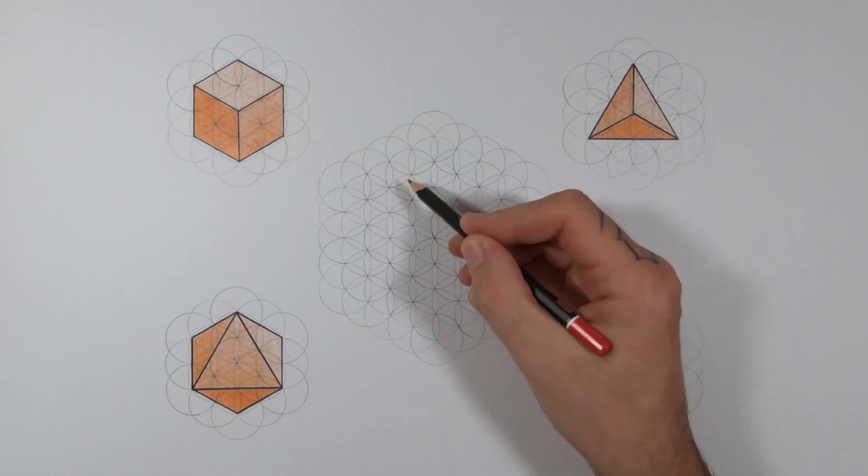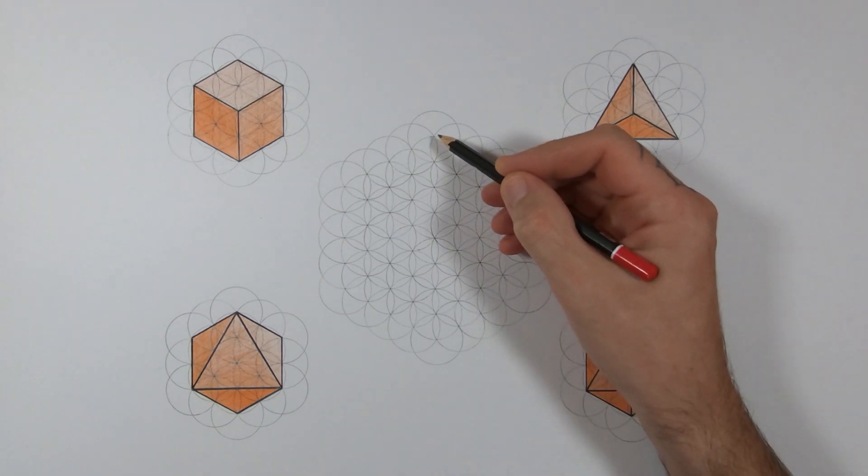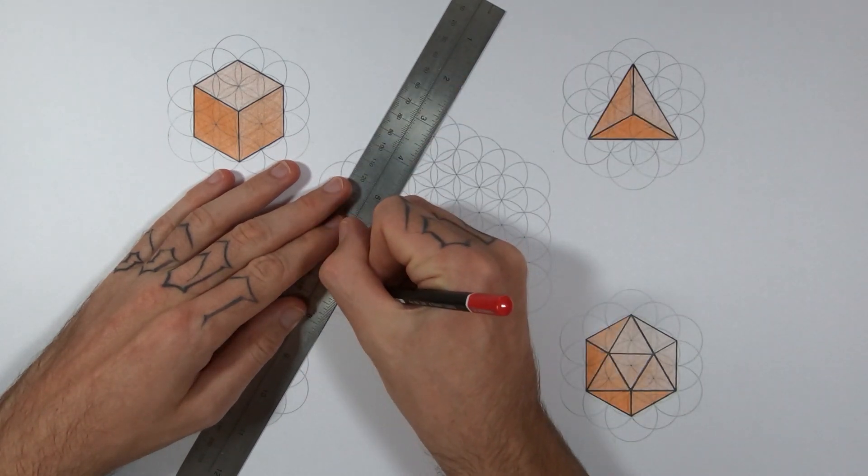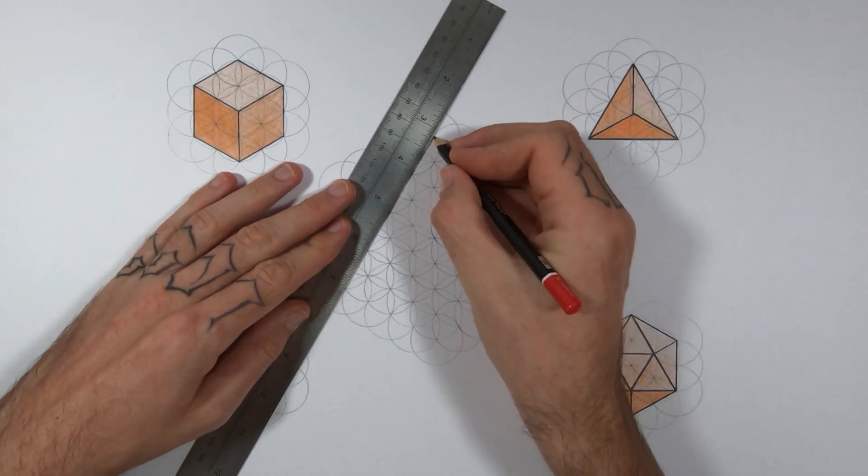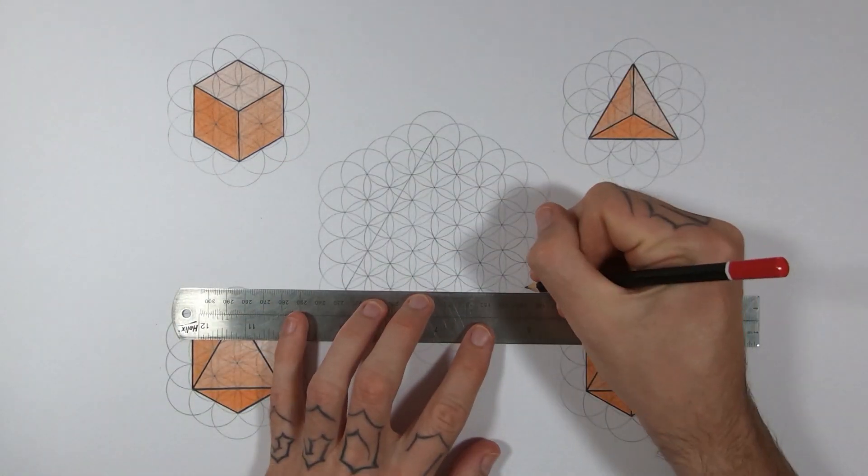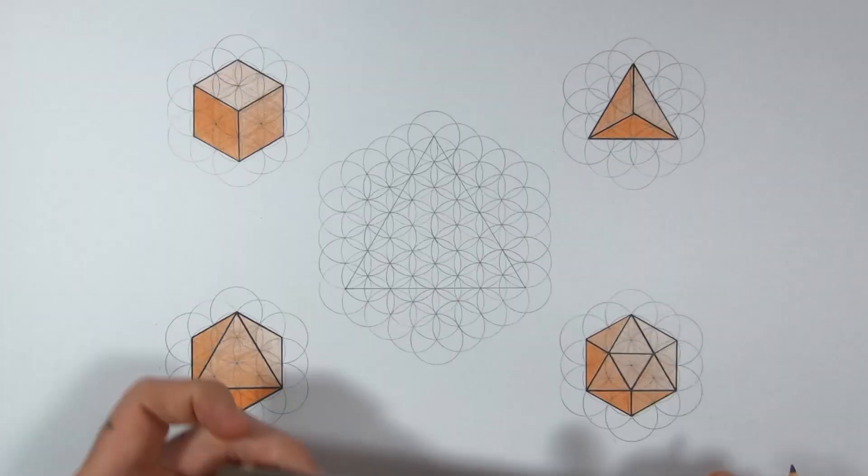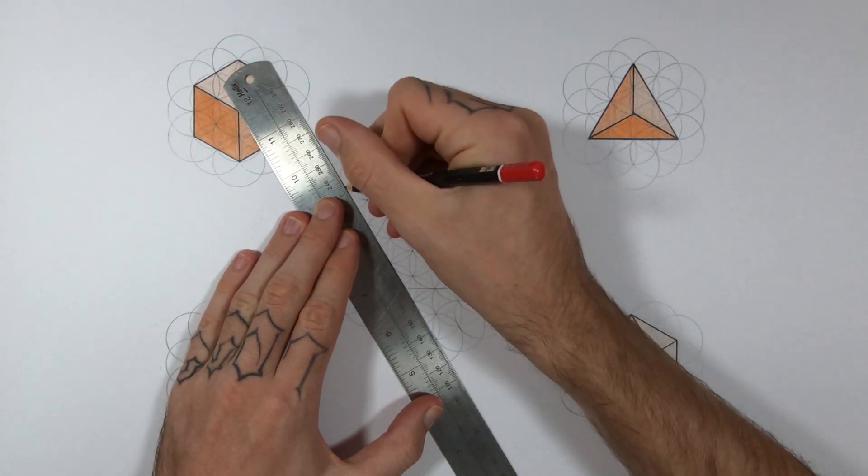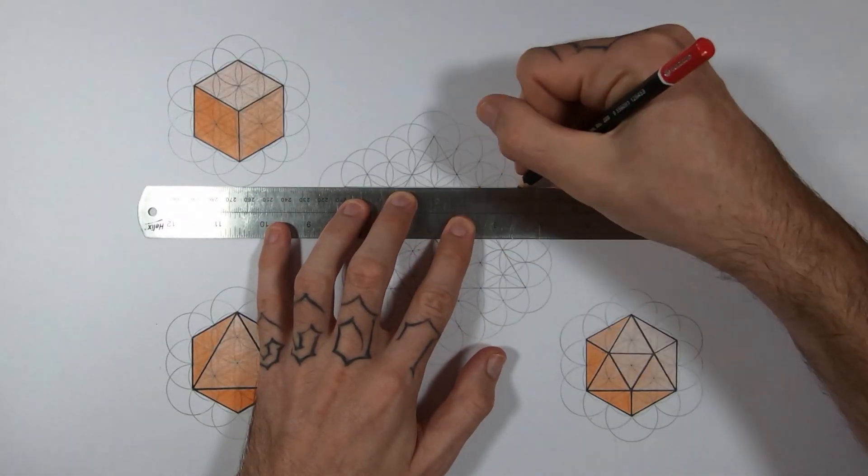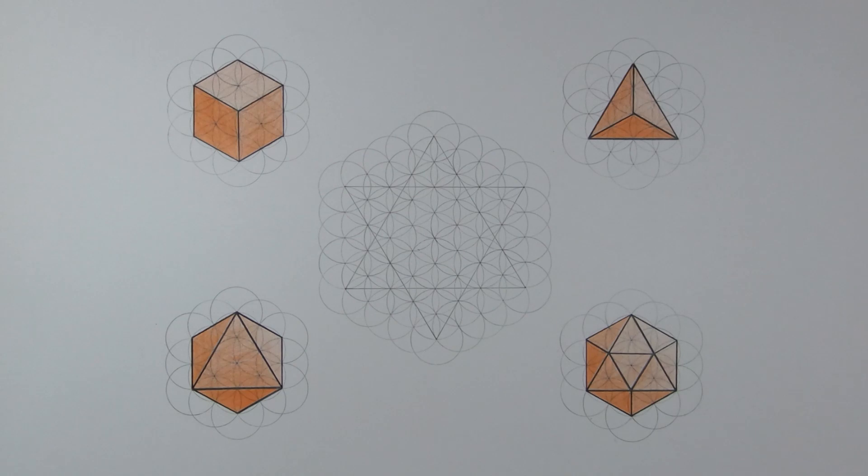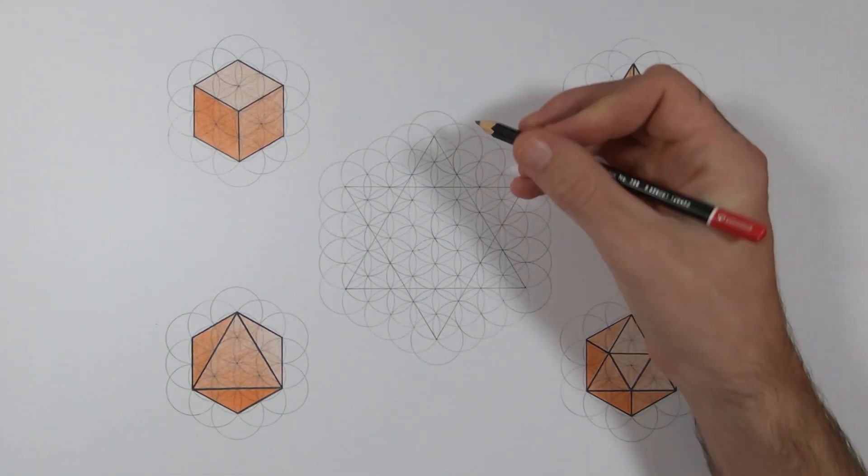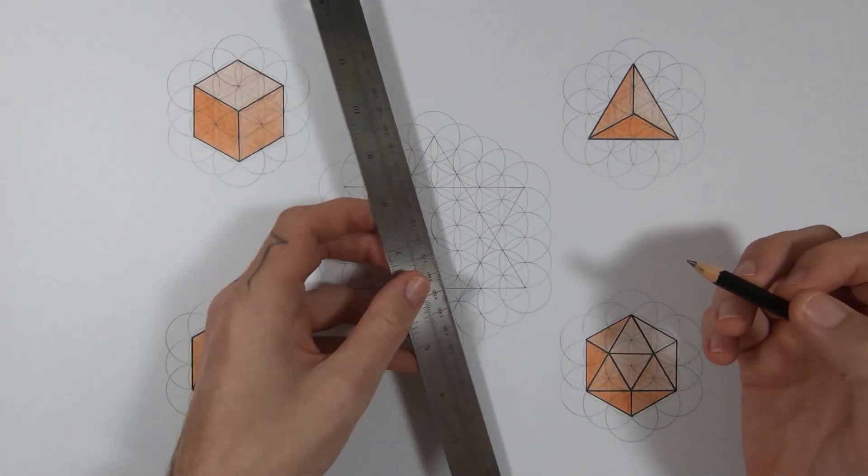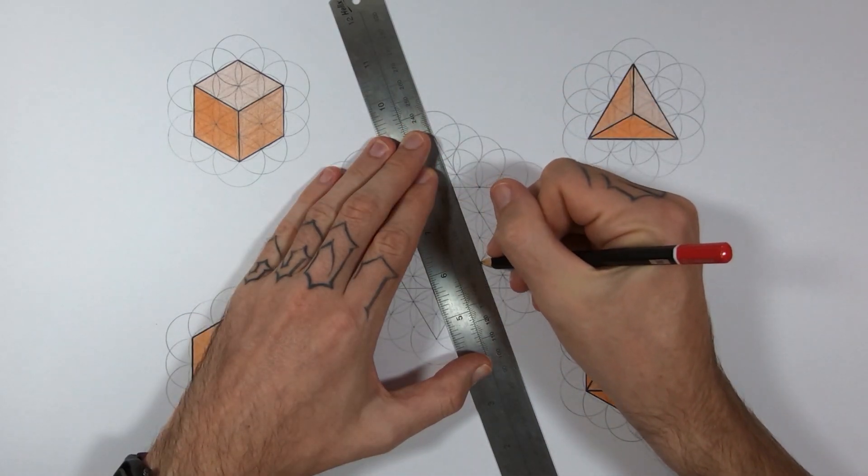Now make a triangle using the outer intersections, exactly the same way you did with the smaller triangle, just on a bigger scale. Then do the same thing the opposite way around so you've got an upside down triangle. Now you've got a hexagram which is also known as the Star of David. If you connect the tips of the star to the center of the lines of the star, that'll give us all the construction lines we need to create the shape.